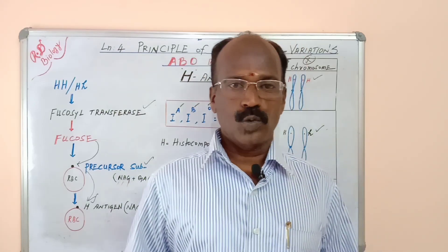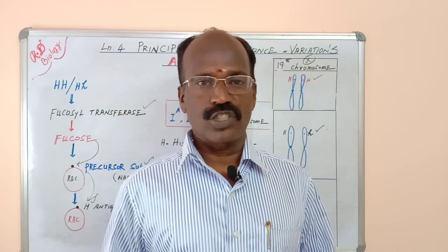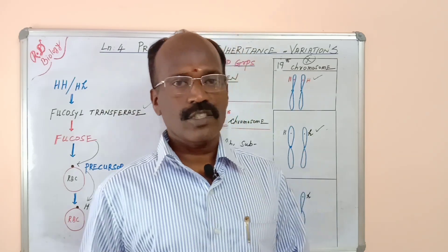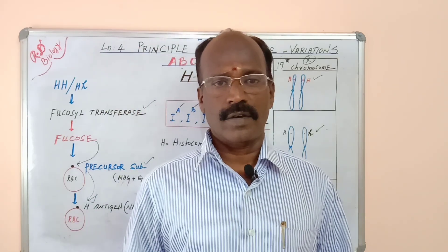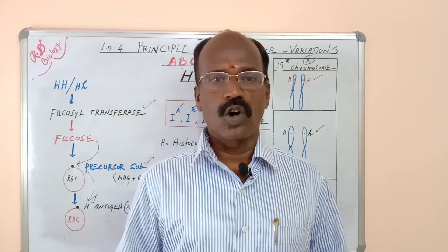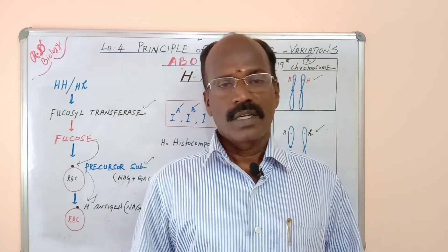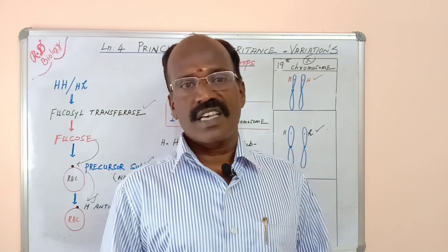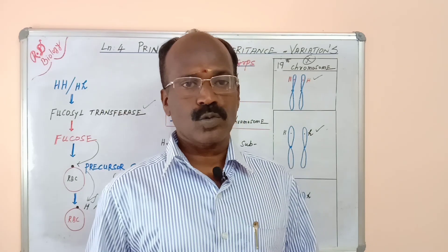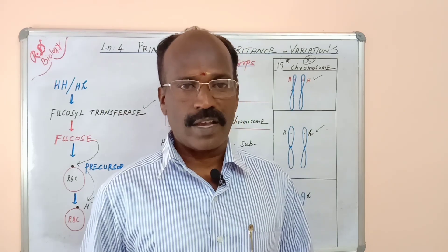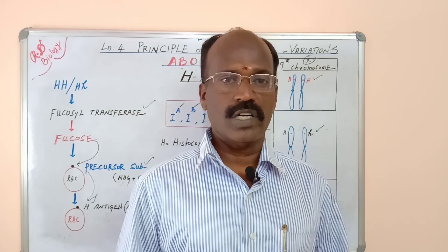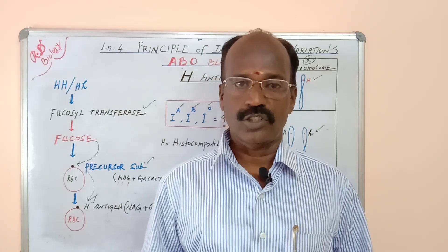Dear students, you are so familiar with antigen A and antigen B. These two antigens are responsible for the formation of four types of blood groups. Now, how are these A and B antigens formed? These two antigens are actually formed from a precursor substance, that is what we call H antigen.